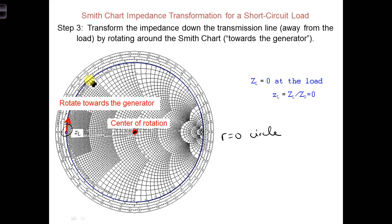However, as we rotate, we're crossing different arcs that have different values corresponding to imaginary impedances.